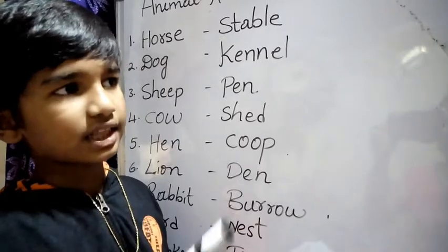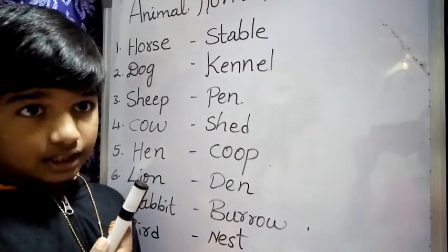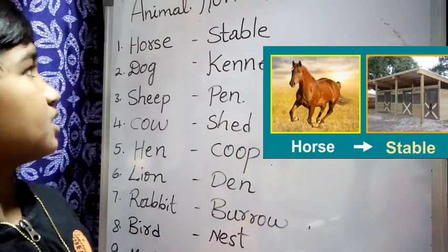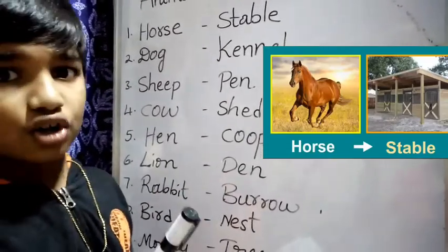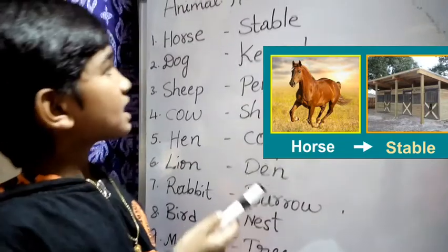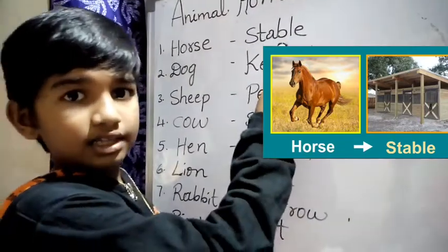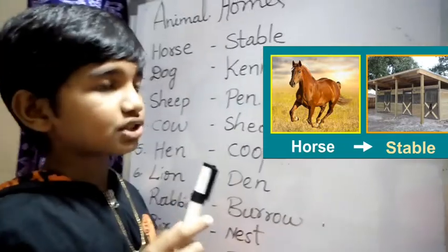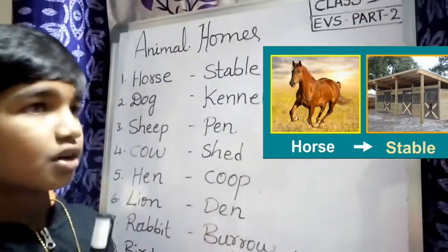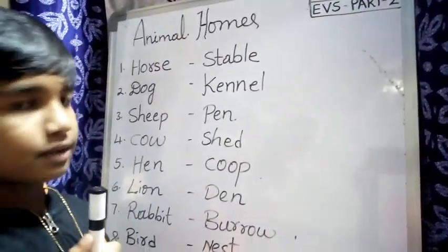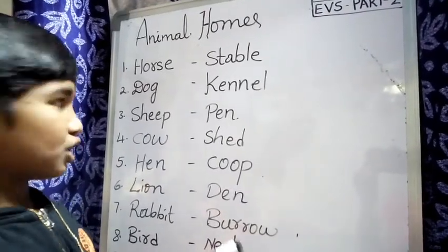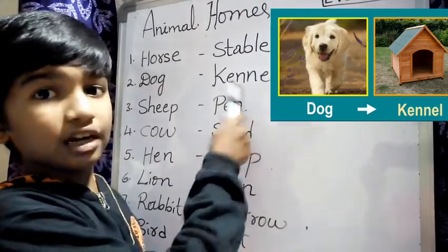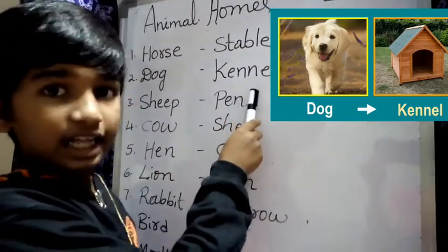First — see that picture. What is that picture? Yes. Horse. Horse lives in a stable. Next picture — what is that picture? Yes. Dog. Dog lives in a kennel.